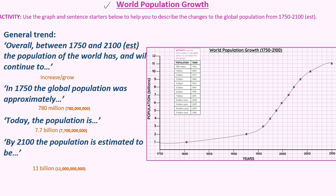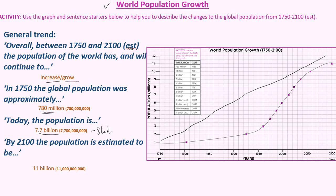Now let's look at world population growth. This graph represents world population growth from 1750 down to 2100. The general trend is that the overall population of the world has and will continue to increase. In 1750, the global population was around 780 million — not yet 1 billion. Today, around 2023, we are looking at approximately 7.7 to 8 billion people on Earth. By 2100, it is estimated that the world population would be around 11 billion people.